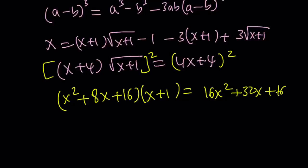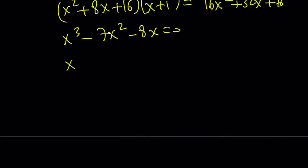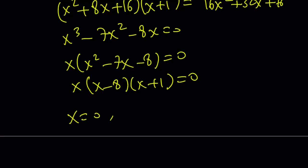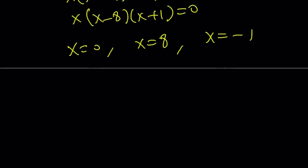If you arrange all the terms and simplify, you're going to get something you can factor. Taking out an x: x(x squared minus 7x minus 8) equals 0, which factors into x(x minus 8)(x plus 1) equals 0. And from here, you're going to get three solutions just like before: x equals 0, x equals 8, and x equals negative 1.